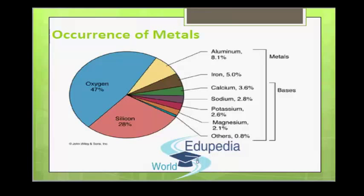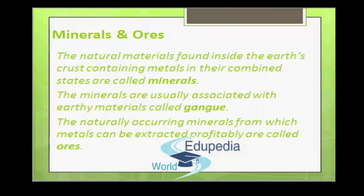Metals such as zinc, iron, tin and lead occurring in the middle of the activity series are moderately reactive and occur in the earth's crust usually as oxides, carbonates or sulfides. The natural materials found inside the earth's crust containing metals in their combined states are called minerals. Minerals are usually associated with earthy materials called gangue.